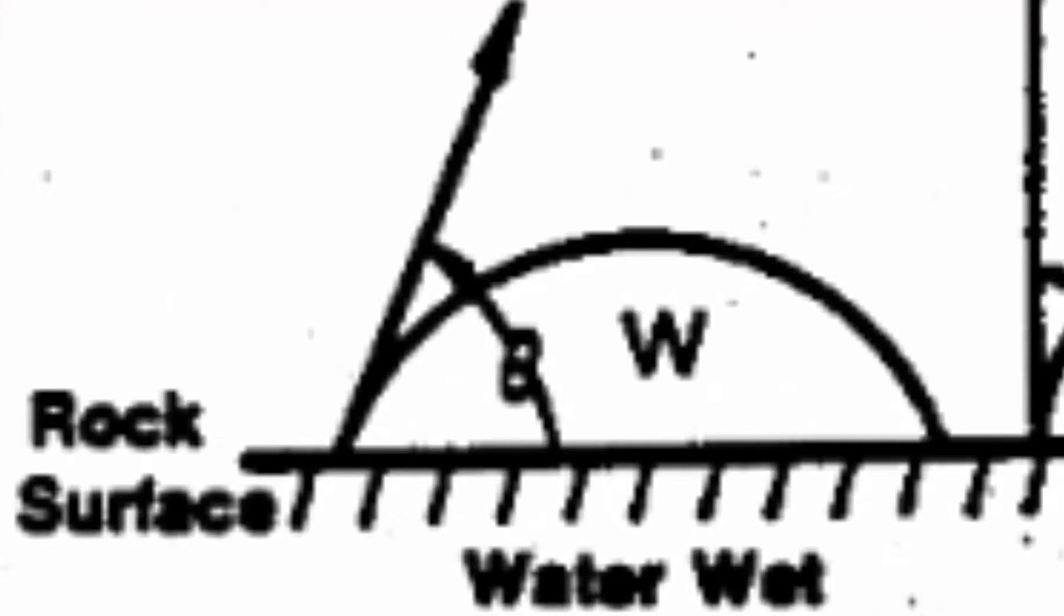Image 1: Reservoir is said to be water-wet. That is, water preferentially wets the reservoir rock when the contact angle theta between the rock and water is less than 90 degrees.